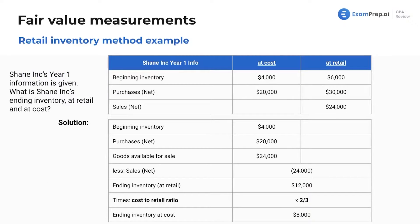Here is another example. Shane Inc.'s year one information is given. Here's the given information up here and the solution down here. What is Shane Inc.'s ending inventory at retail and at cost?